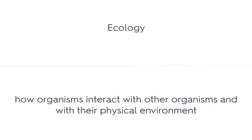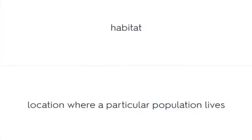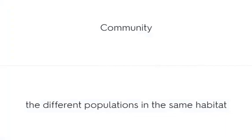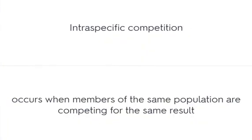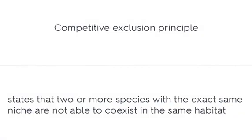Ecology is the study of how organisms interact with other organisms and with their physical environment. An ecosystem is a community of organisms and the biotic and abiotic factors that affect them. A habitat is the location where a particular population lives. A community is the different populations in the same habitat. Intraspecific competition occurs when members of the same population compete for the same resources. Interspecific competition occurs when members of two or more different species compete for resources. The competitive exclusion principle states that two or more species with the exact same niche cannot coexist in the same habitat.